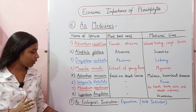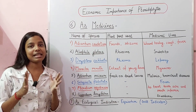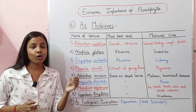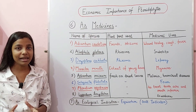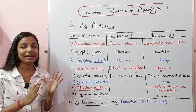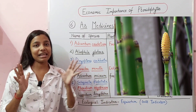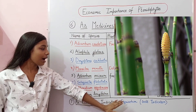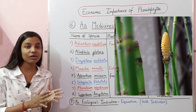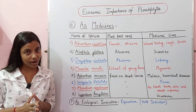Pteridophytes as ecological indicators: many pteridophytes indicate the presence of certain metals or heavy metals within the soil. An important example is Equisetum, which is a gold indicator pteridophyte — it indicates the presence of gold as well as some other minerals within the soil.